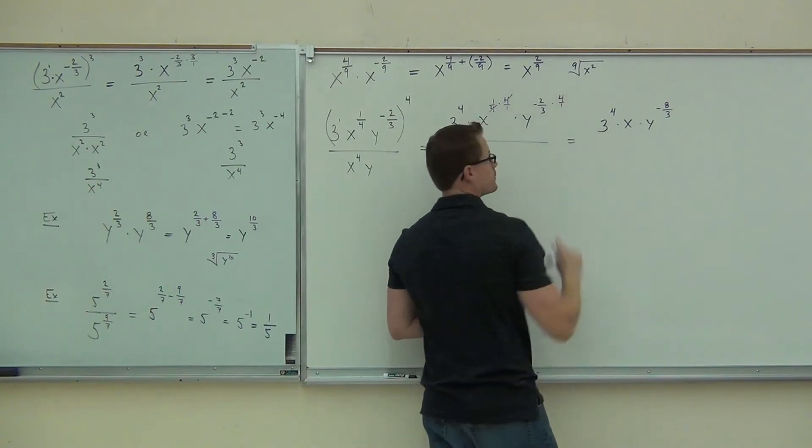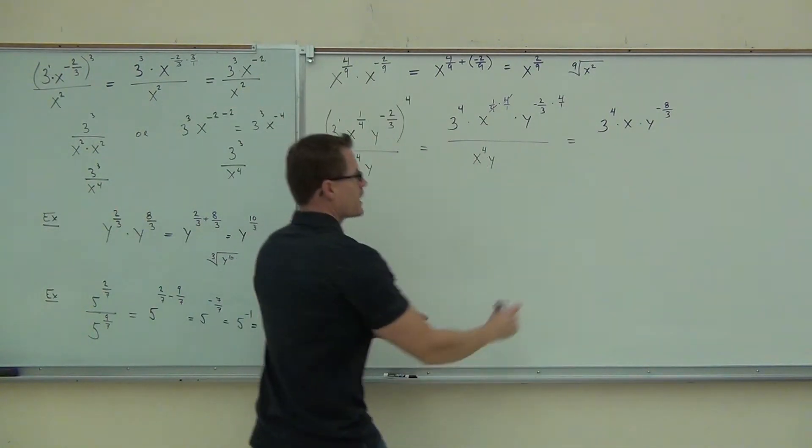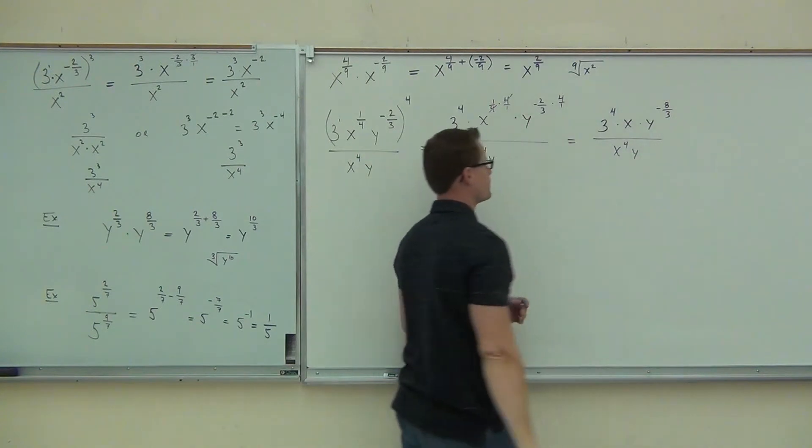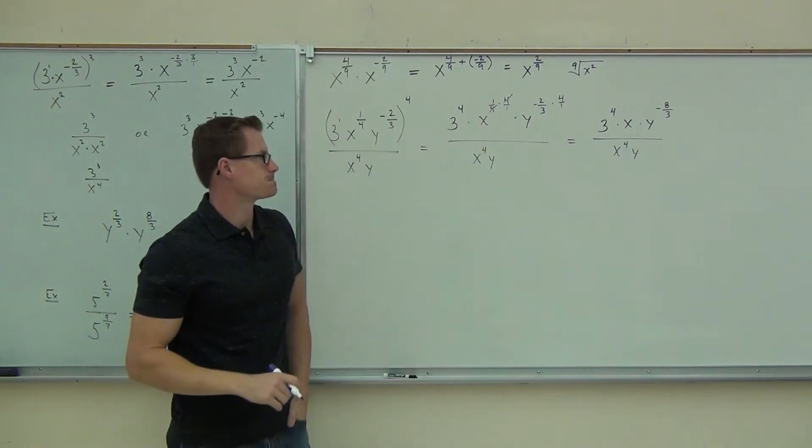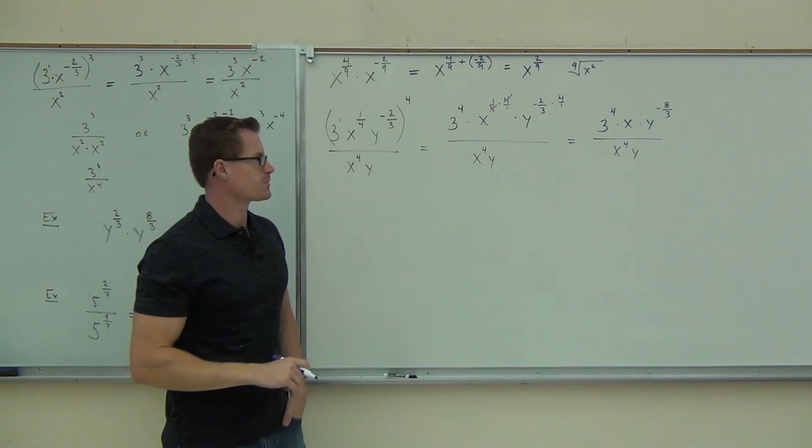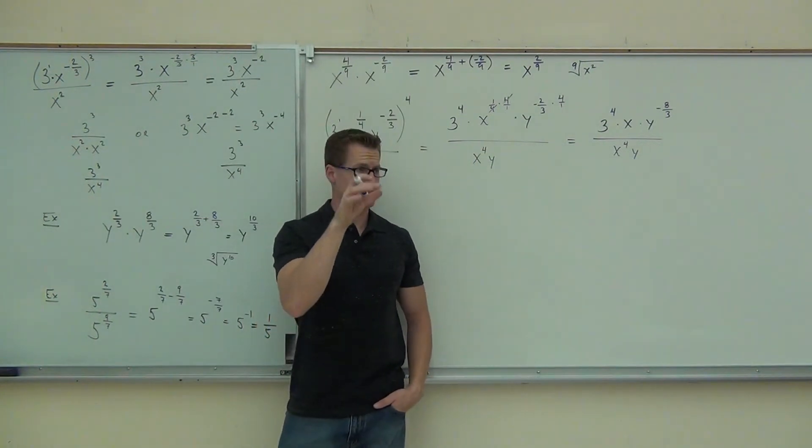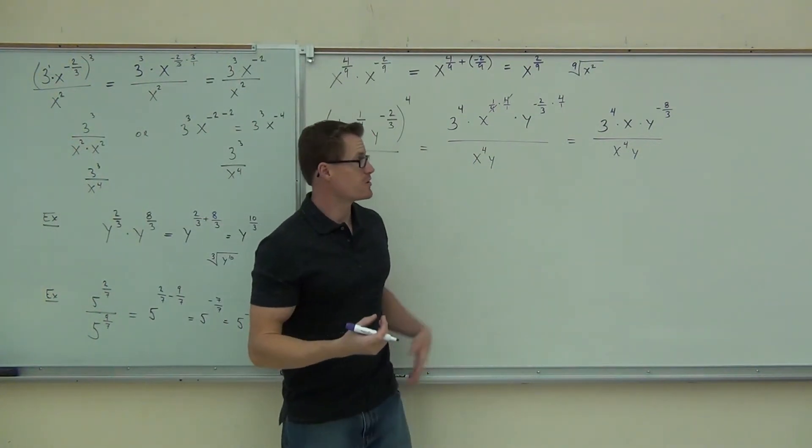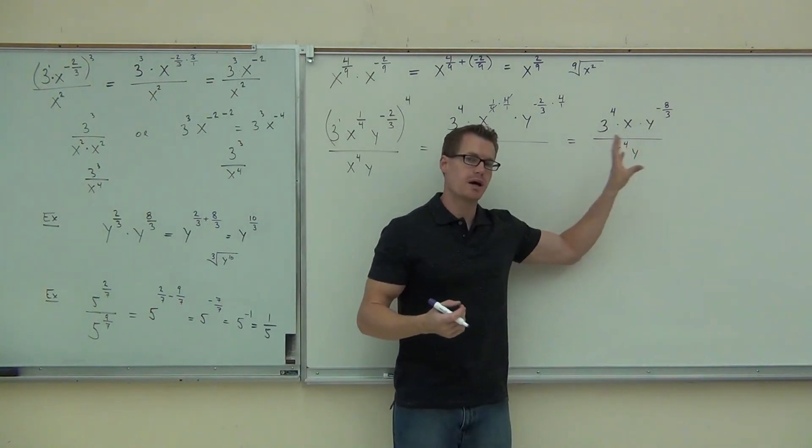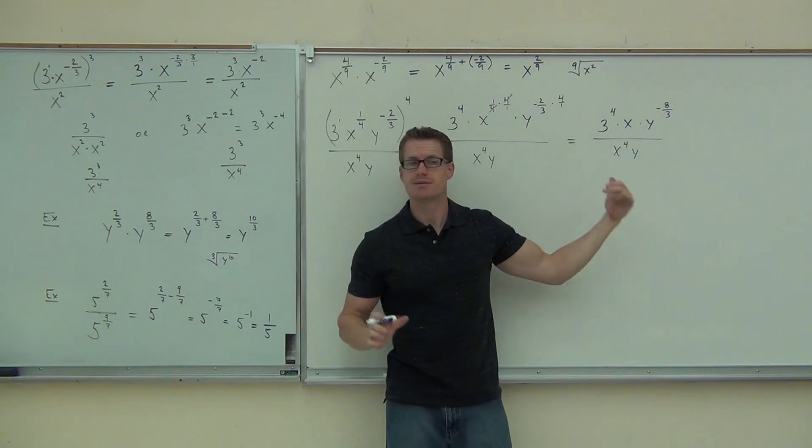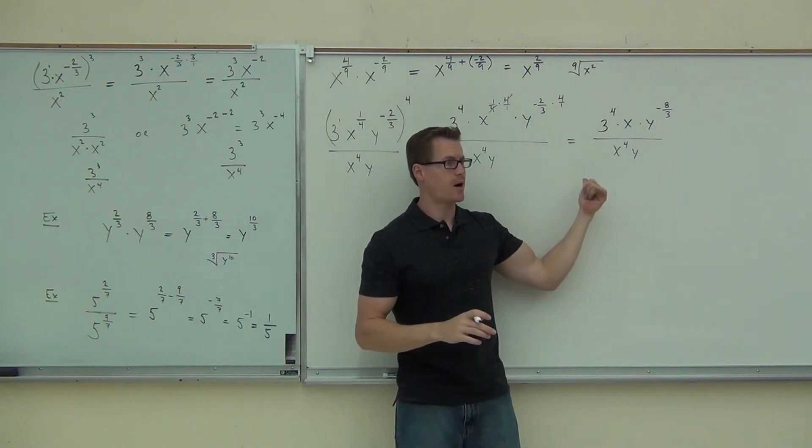Remember, this is over one. And we still have this denominator, x to the fourth, y. Are we done? We still have common bases on the numerator and denominator. You need it so that if you ever have a fraction, everything's being multiplied. If you have the same bases, you need to combine them. You can't leave it like this. This isn't good enough. This is about halfway done. One more big step to do.